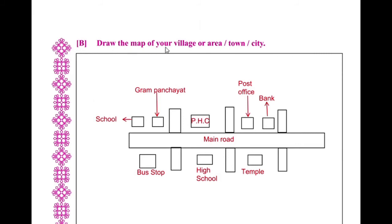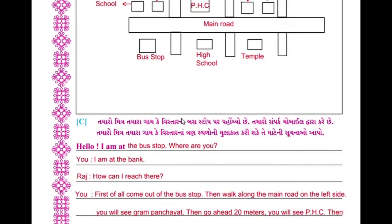Now draw a map of your village or area of town or city. Include landmarks such as a school, a main road, a PHC (Primary Health Center), a post office, a bank, a high school, and a temple.